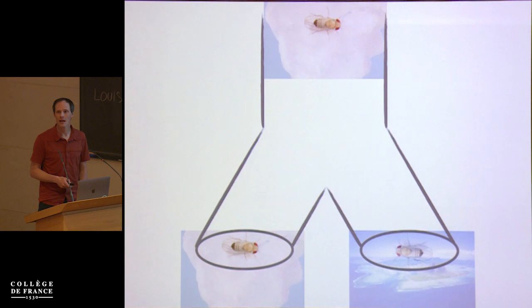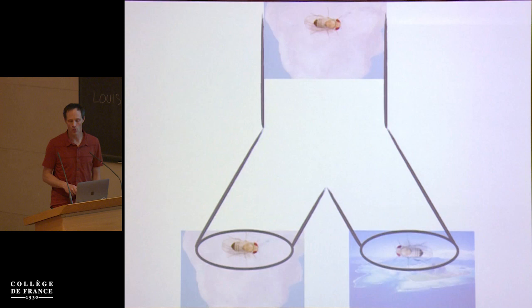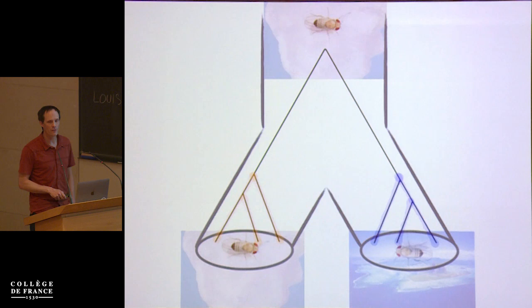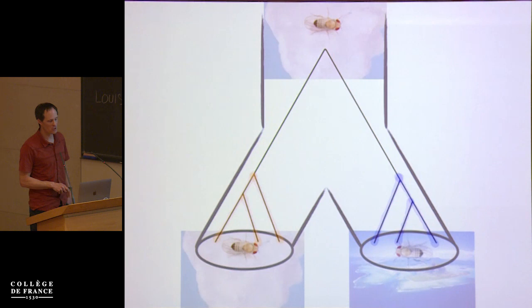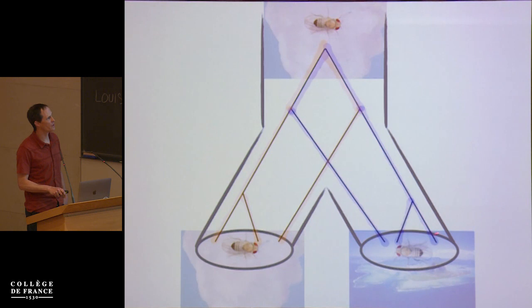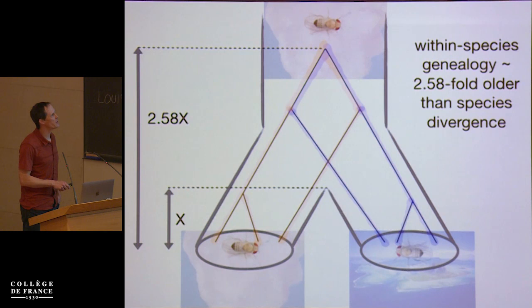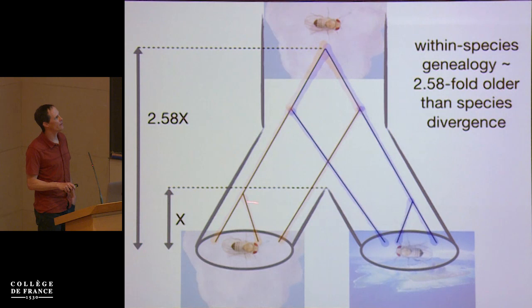Let's think about what has happened in that quarter of a million years since the ancestor of *mauritiana* got to the island of Mauritius. These species are characterized by a relatively recent divergence time and large ancestral effective population size. What that means is that a minority of loci in the genome are reciprocally monophyletic and sort by species. A majority of loci show incomplete lineage sorting, where alleles from simulans share a more recent common ancestor with alleles from *mauritiana* than with other simulans alleles, and vice versa. We estimate that the within-species genealogy, on average, is about two to three times deeper than the species divergence.